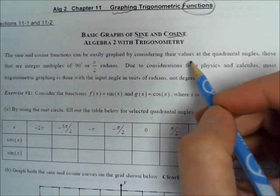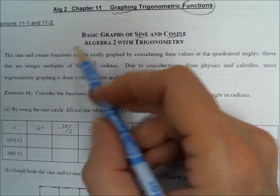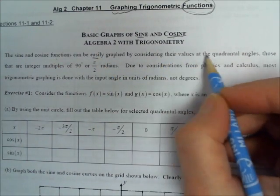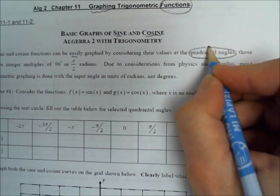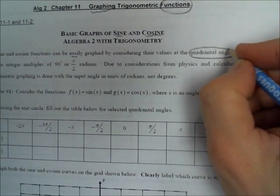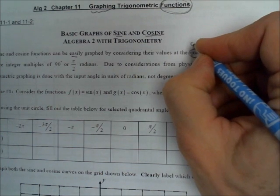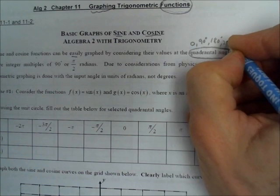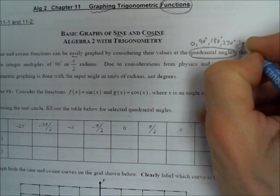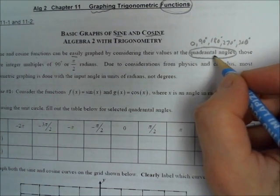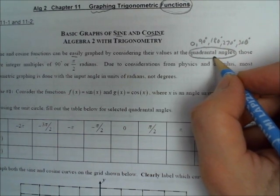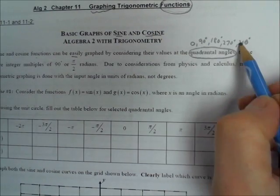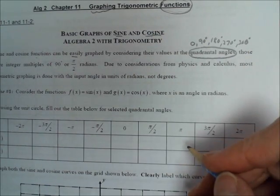Sine and cosine functions can be easily graphed. We're going to look at the values of the quadrantal angles — those are the multiples of 90 degrees: 0, 90, 180, 270, and 360 degrees. Those are the ones on the x and y axes, not in a quadrant. We'll find the sine and cosine of those angles and put them together in a chart.